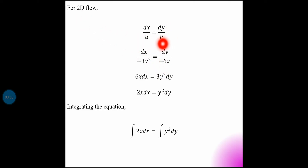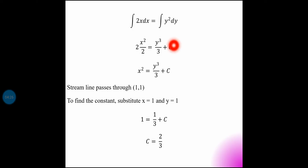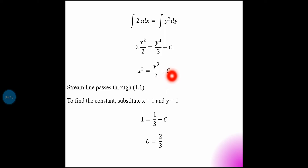For this 2D case, substituting the values of u and v: integrating, we get -3y² dy integrated gives -y³/3, and x dx gives x²/2. After cancelling the factor of 2, we obtain x² = y³/3 plus a constant of integration C. Since the streamline passes through the point (1, 1), we substitute to find C.